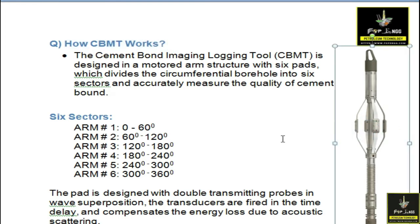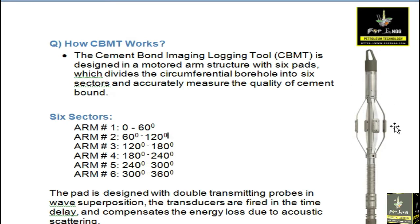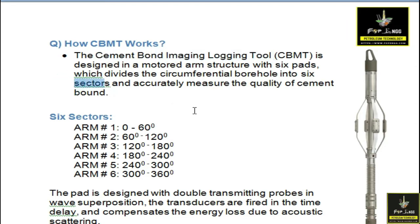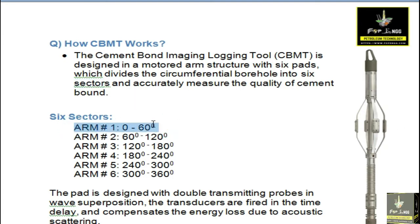This is the diagram of the CBMT tool. There are six pairs of the CBMT tools. The cement bonding log is designed with a motor pad arm structure. These arms are of six pairs, which divide into circumferential borehole sectors to measure the quality of the cement bond.